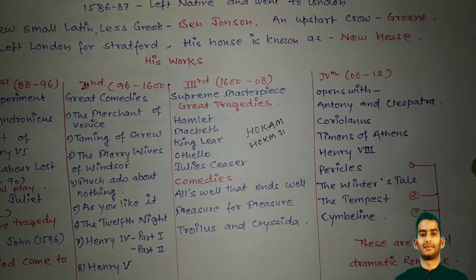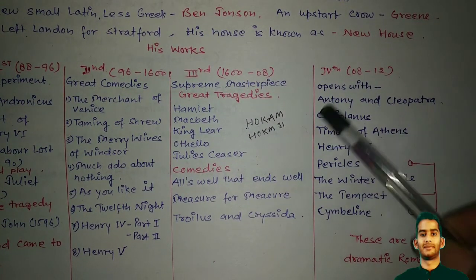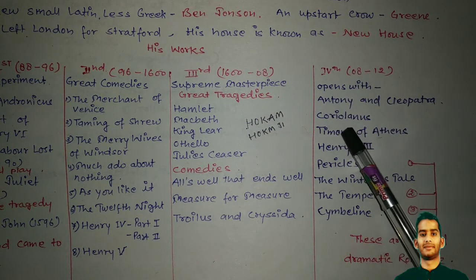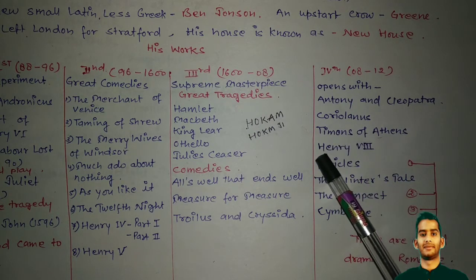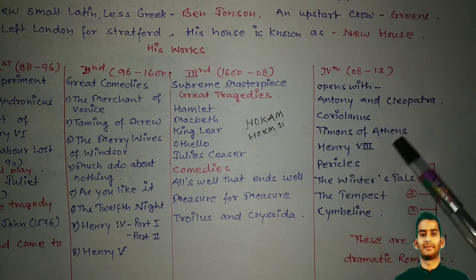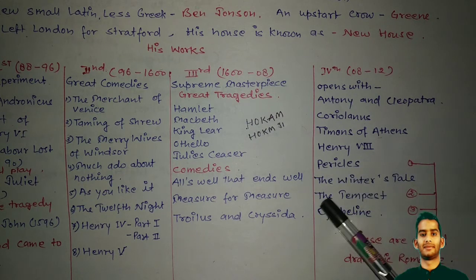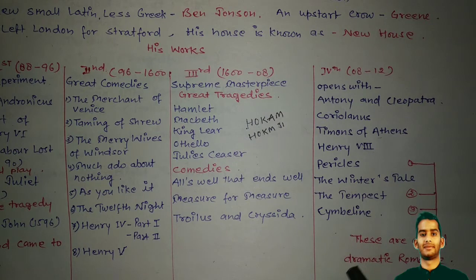The fourth phase, from 1608 to 1612, opens with Antony and Cleopatra, Coriolanus, Timon of Athens, Henry VIII, Pericles, The Winter's Tale, The Tempest, and Cymbeline. Pericles, The Tempest, and Cymbeline are also called dramatic romances.